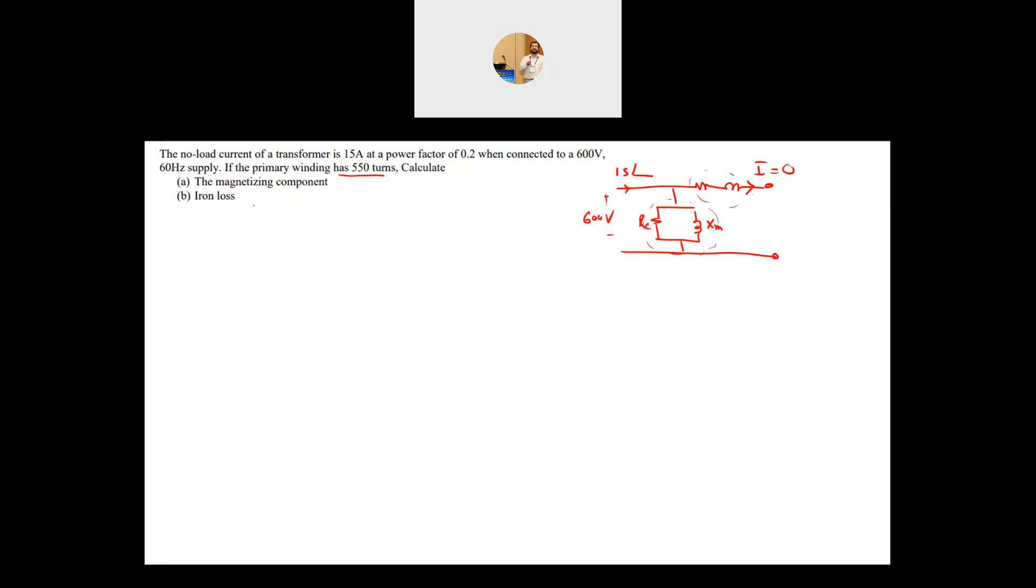Here it says find the magnetizing component, so I want to find IM, how much of this current flows in the XM. And what is the iron loss, what is the power loss in the RC. So in other words, my objective here is to find XM and RC. That is the question.